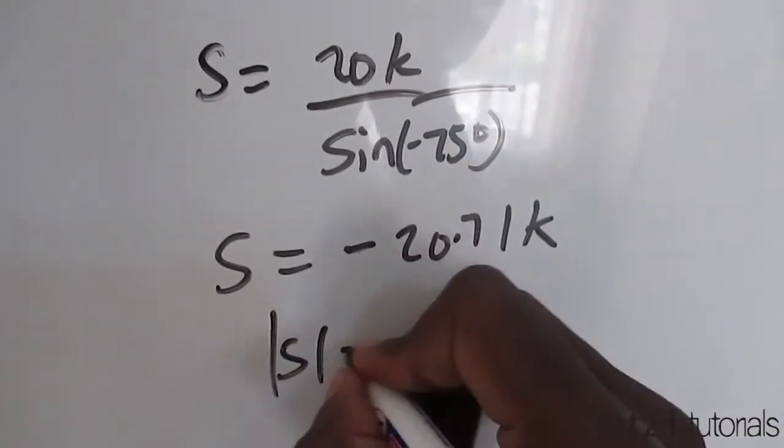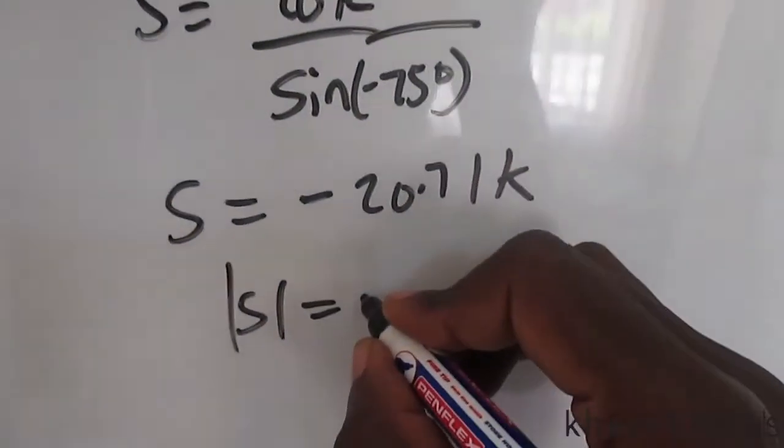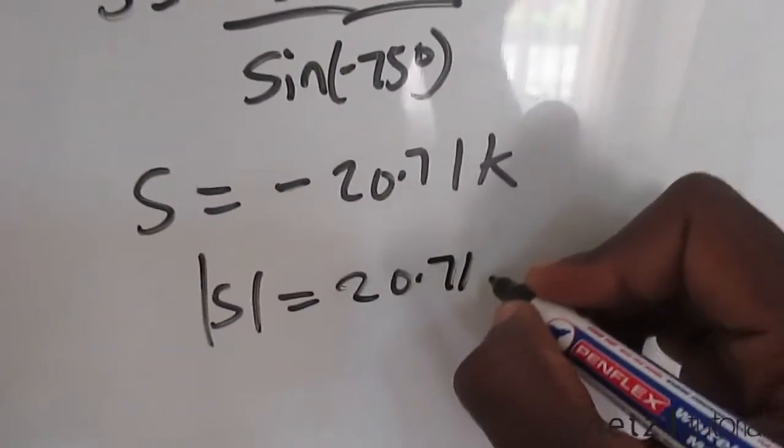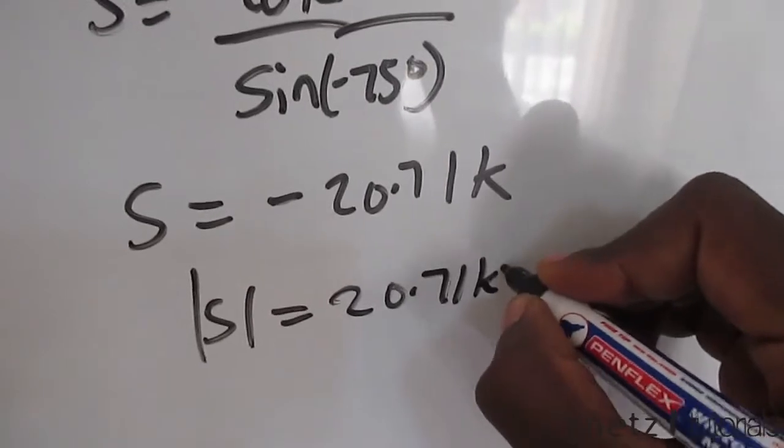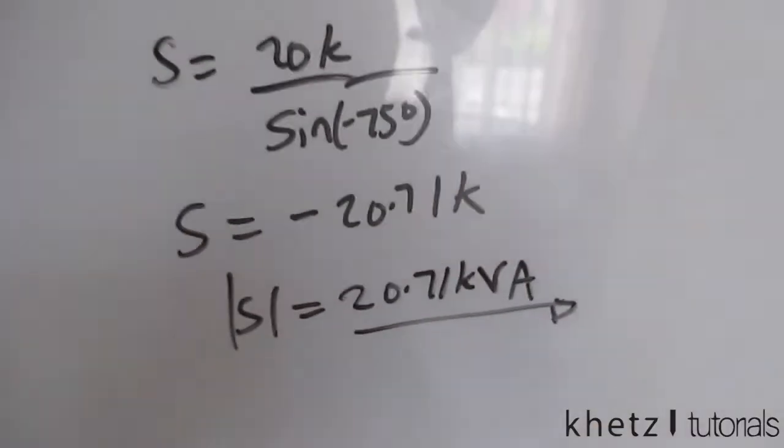Now we're interested in the magnitude of this apparent power, so we're actually going to take the absolute of that, which is 20.71 kVA. That is your apparent power and that is the second part of the question.